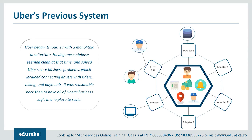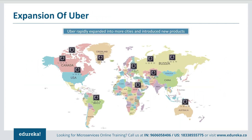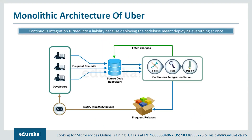All features — passenger management, billing, notifications, trip management, and driver management — were composed in a single framework. Having one codebase seemed clean at the time and solved Uber's core business problems of connecting drivers with riders, billings, and payments. But as Uber started expanding worldwide into many more cities, it continuously faced problems of scalability and continuous integration. Developers could not continuously build, test, deploy, and release software frequently as Uber expanded city-wise. Adding new features and fixing bugs in a single repository became extremely difficult.